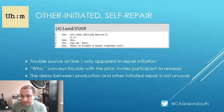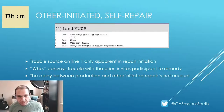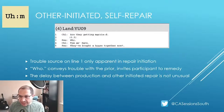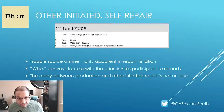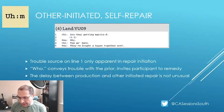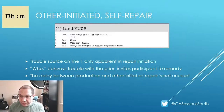This is an example of an other-initiated self-repair sequence. The trouble source is on line one, but this only becomes apparent in line three. In line three, the repair initiator is an insert sequence that looks back at the initiating turn, marking it as inadequate for full understanding. This form of repair initiation invites the producer of the trouble source to offer a repair solution. The sequential organisation here offers a glimpse into the preference organisation of such a sequence, as there is a delay between the trouble source and the repair initiator.